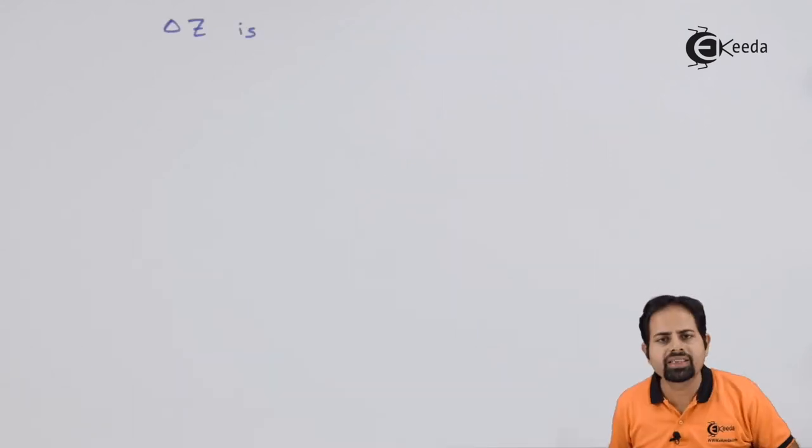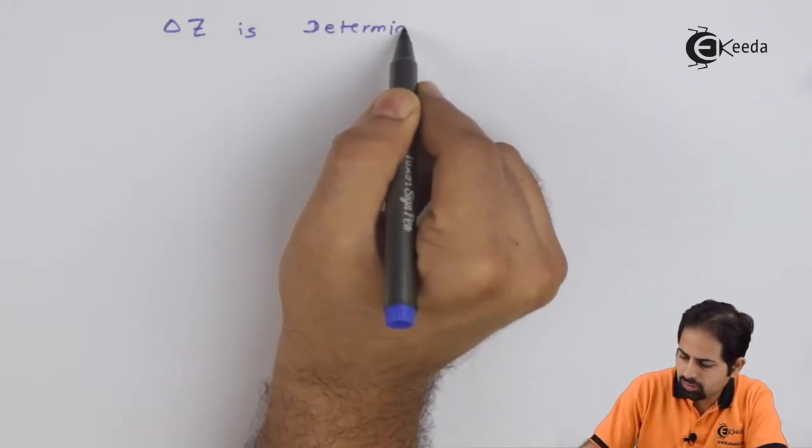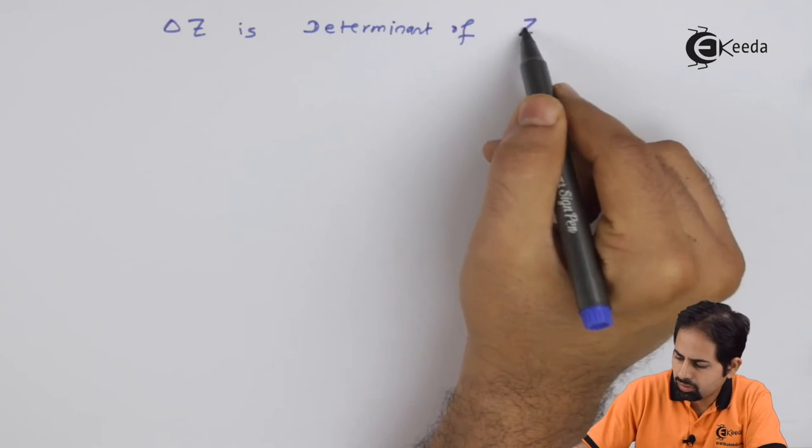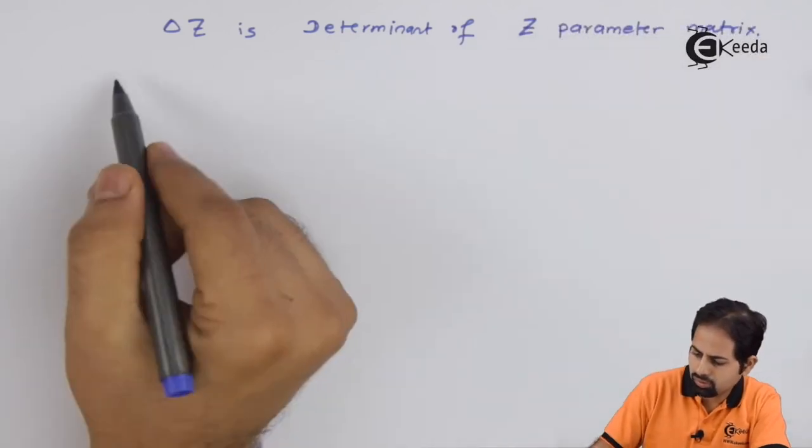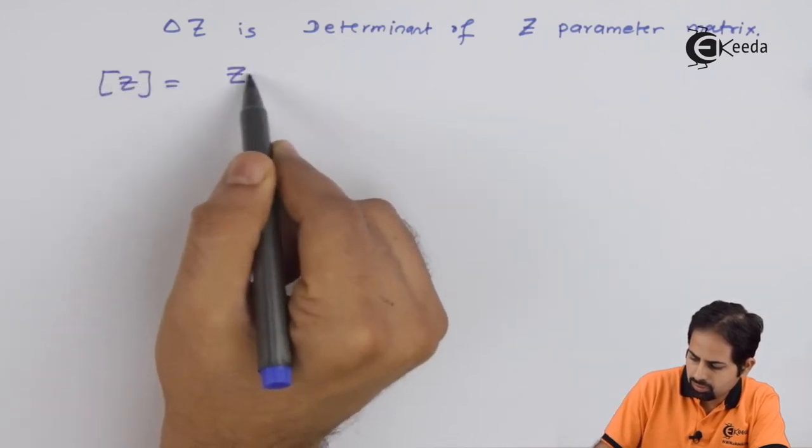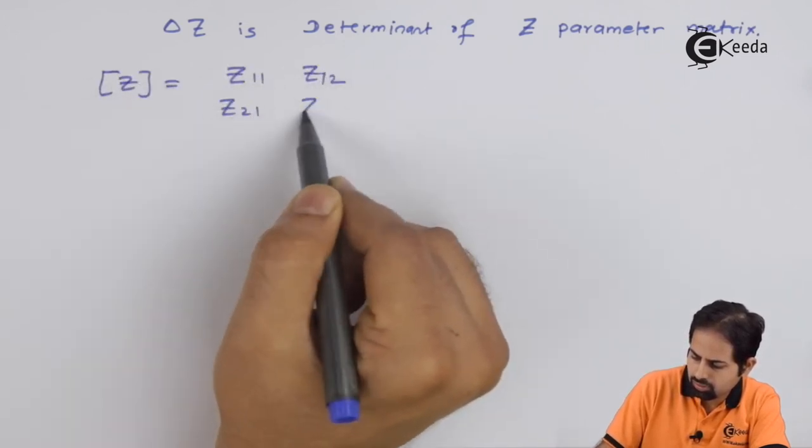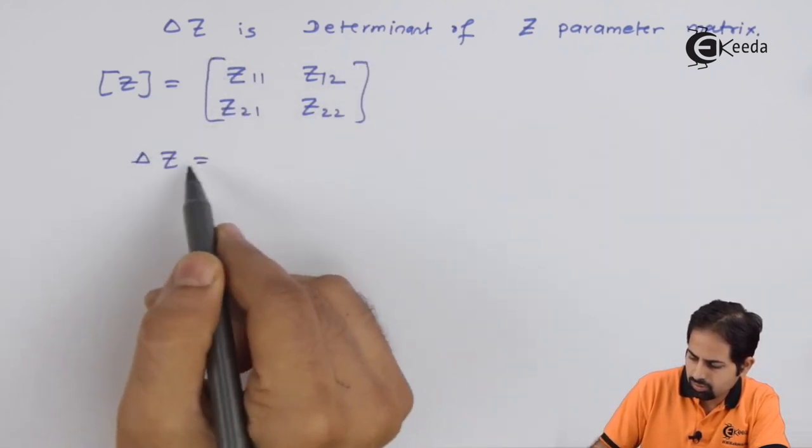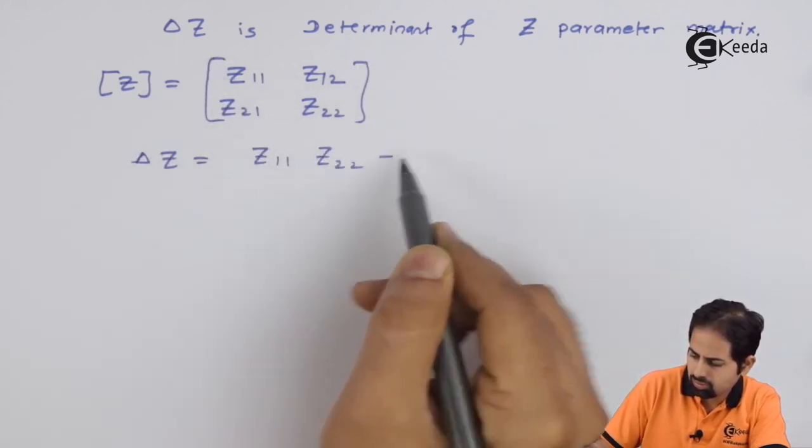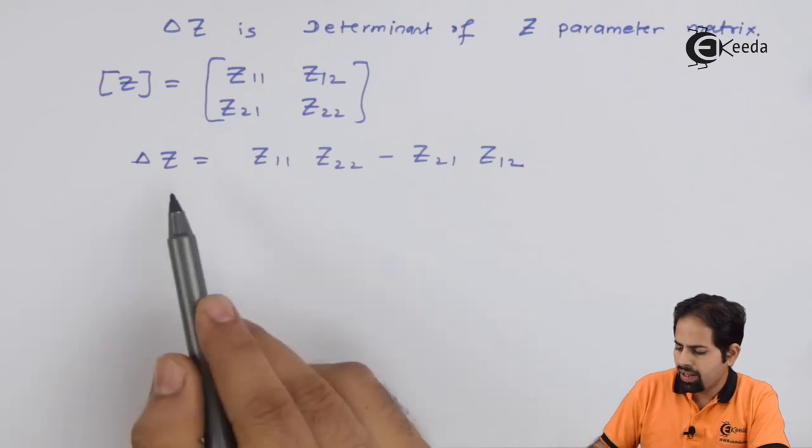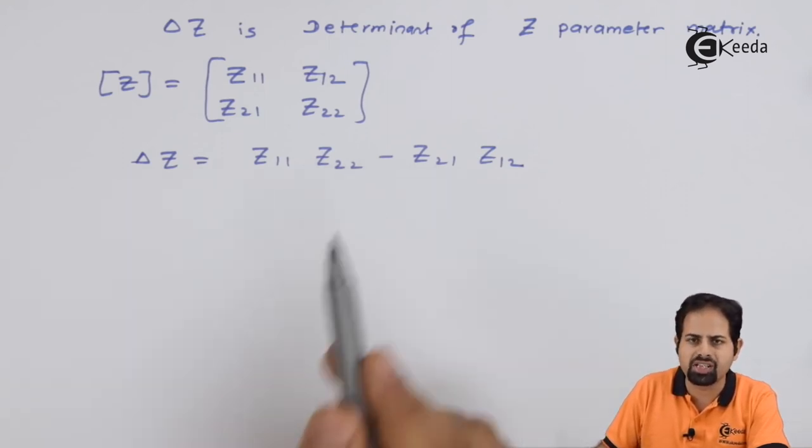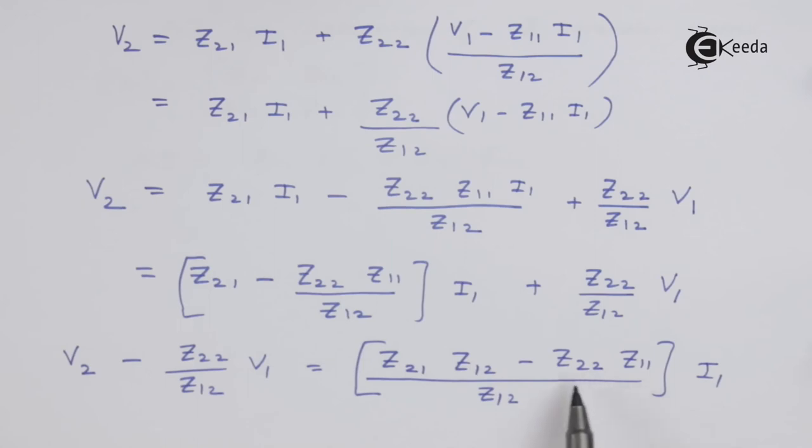Delta Z is the determinant of Z parameter matrix. So as you can see, this is delta Z. So minus of delta Z will be minus of this and that is our term. So this is nothing but minus of delta Z.